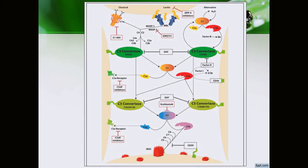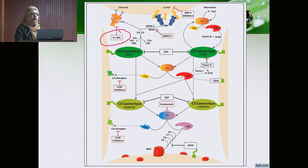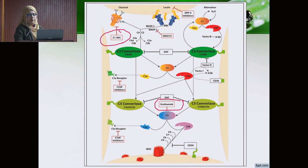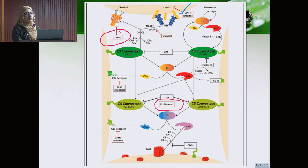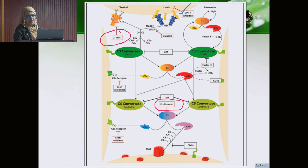What are the complement-targeting therapeutic agents? Two are already FDA approved: the C1 inhibitor, approved for hereditary angioedema, which blocks the classical pathway; and the anti-C5a inhibitor Eculizumab, approved for PNH and atypical hemolytic uremic syndrome. Additionally, DPP4 inhibitors are thought to act on the lectin pathway by blocking mannose-associated serine proteases. A researcher gave 131 patients randomly sitagliptin or placebo and found reduced MBL levels, suggesting that C4 is the main culprit in the lectin pathway causing DKD.